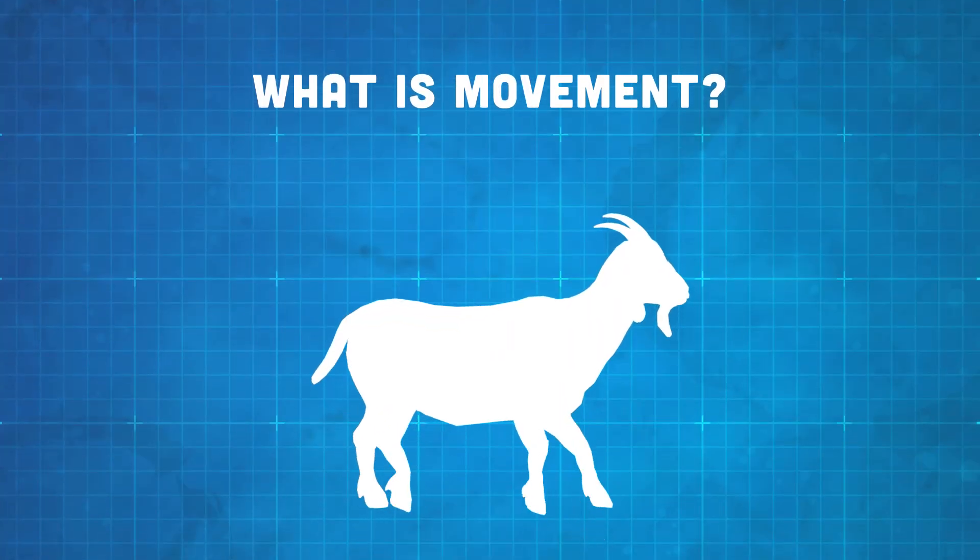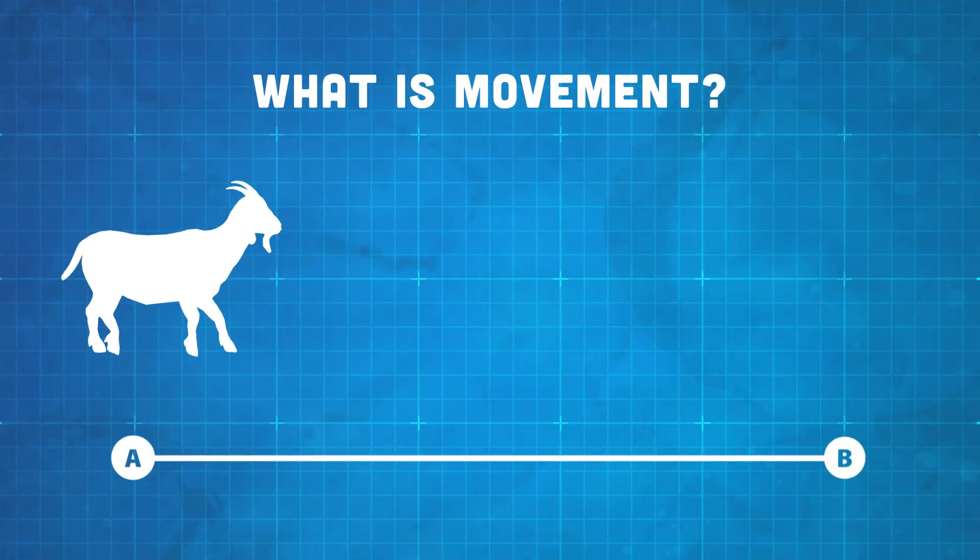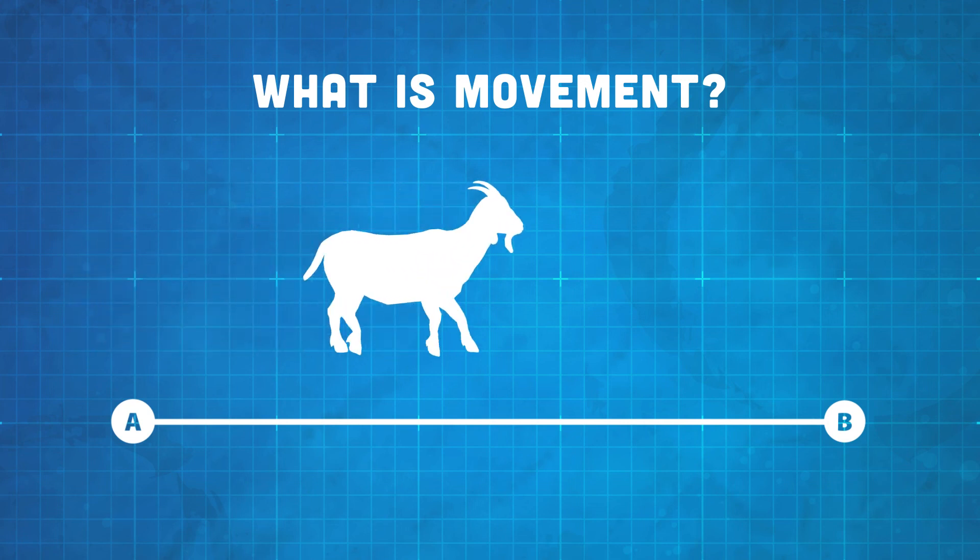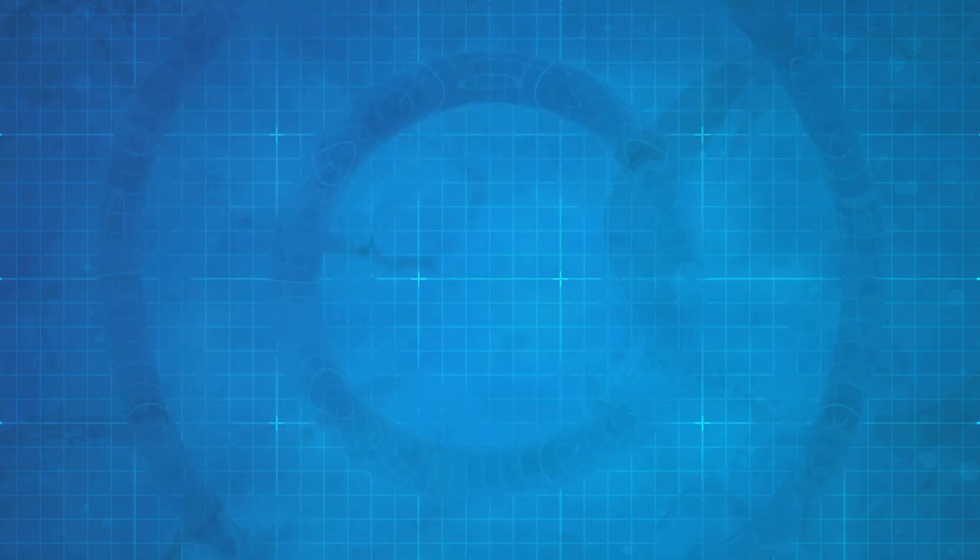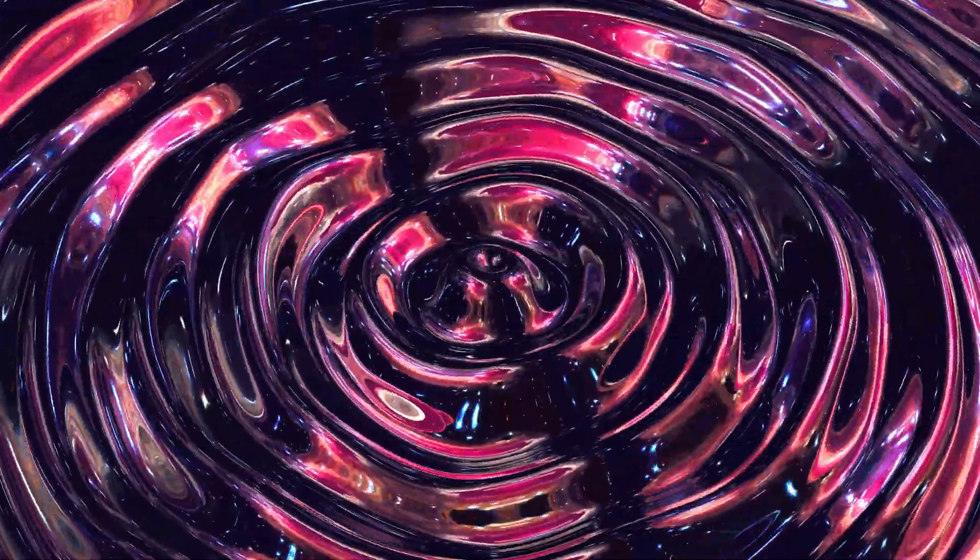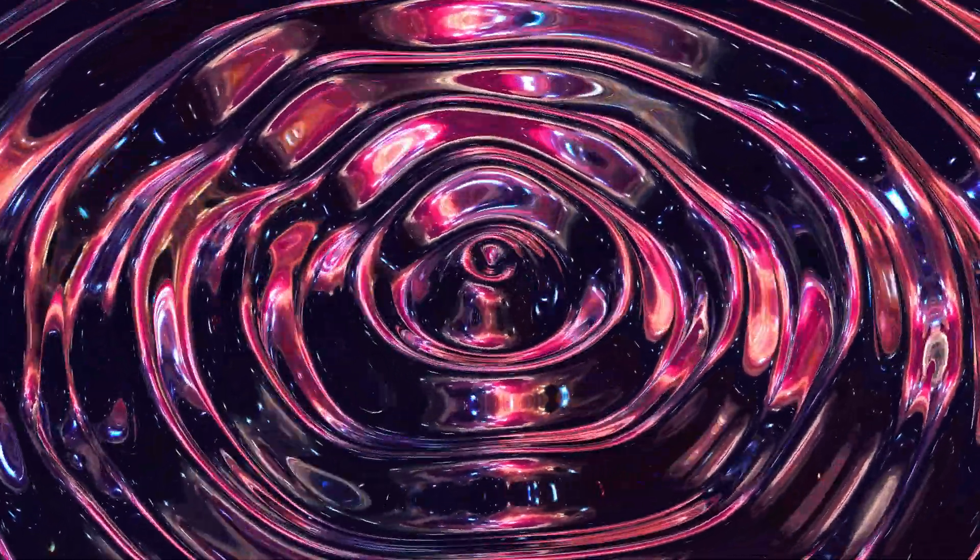But what is movement? The most common definition is that movement occurs when something moves from one point to another in space and time. But what if space and time are also moving outward in all directions as the universe expands? What if the fabric of space-time itself is woven from the same energetic fluctuations as the universe?